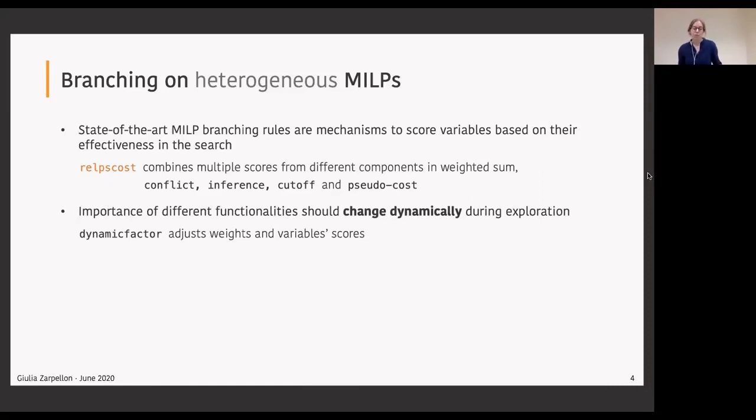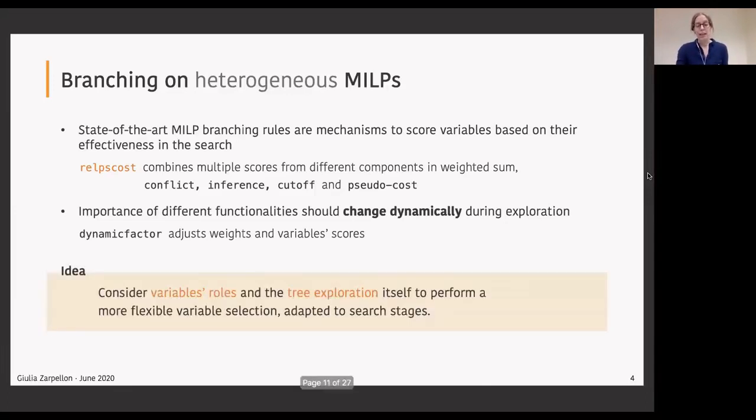Take for example the default branching rule of SCIP, relpscost, which is a reliability variant of hybrid branching. Relpscost is combining multiple scores from different components of the solver in a weighted sum in order to score a variable. And besides, the importance of these different components might change dynamically during the exploration. If you look at the SCIP formula for branching you'll find there's a dynamic factor that adjusts these weights depending on information about the nodes that are pruned in the tree.